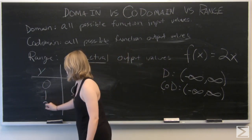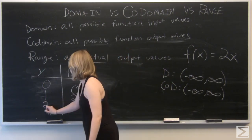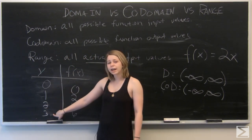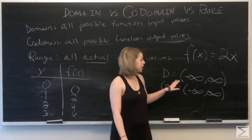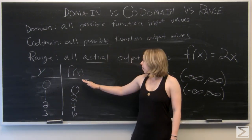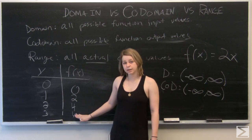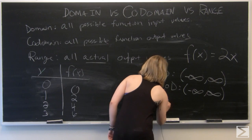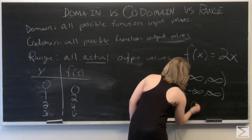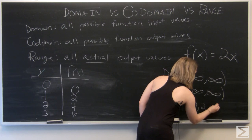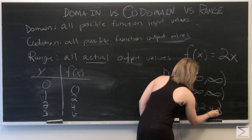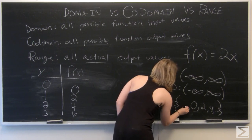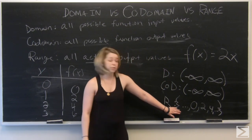And if we continue on, we'll find that even though we can use every x value that we've got in our domain, our output is always going to be even numbers. So we're only using half of our codomain. So our range, we've found, is every even number.